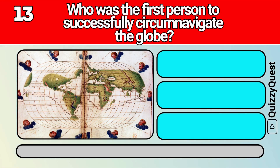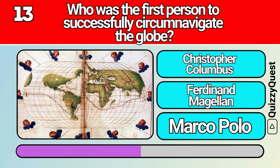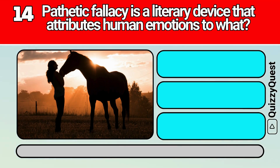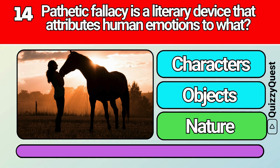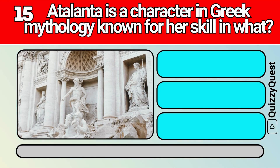Who was the first person to successfully circumnavigate the globe? Pathetic fallacy is a literary device that attributes human emotions to what? Atalanta is a character in Greek mythology known for her skill in what?